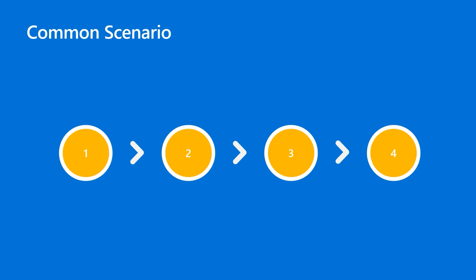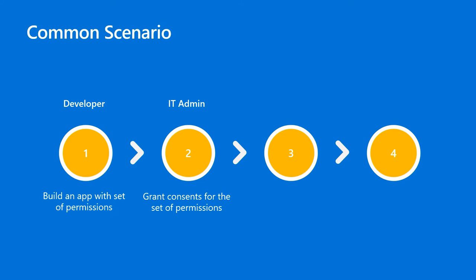A common security compromise scenario for overprivilege observed from the industry usually involves four stages. First, the developer starts configuring the application and adding the permissions it needs. Second, the IT admin grants consent for required permissions after reviewing them. Third, a bad actor starts cracking user credentials and successfully hacks the user identity. If the user happens to own a few applications that are also identified as overprivileged, then the bad actor could use the token of the granted permissions to retrieve sensitive data.